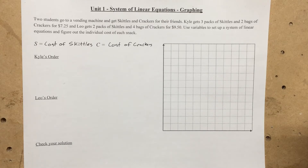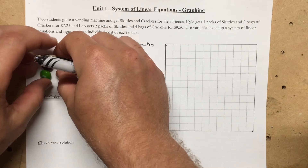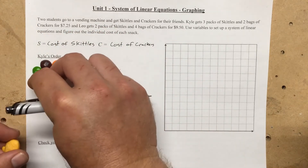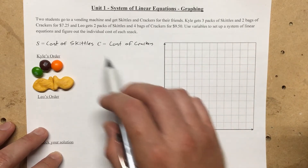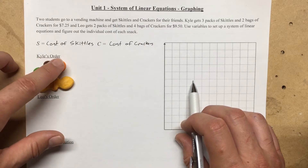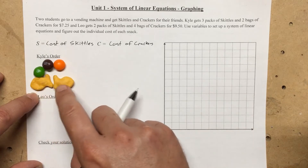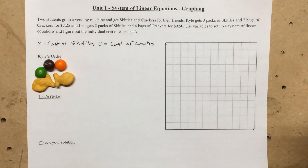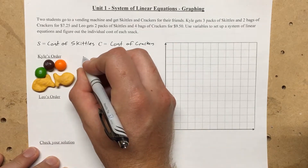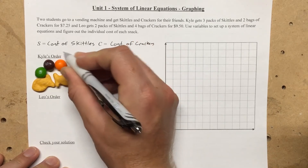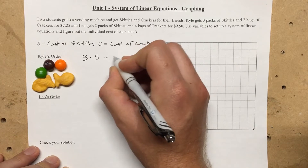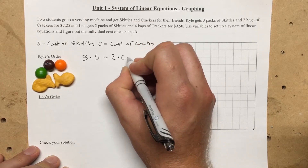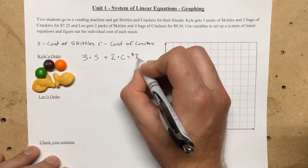I'm going to set up Kyle's order. This might be a little bit silly but I hope it helps visually show Kyle's order. If you read the problem again, he gets three packs of skittles and two bags of crackers for seven dollars and 25 cents. I put three skittles here to represent the three packages of skittles, and two goldfish crackers to represent the two packages of crackers.